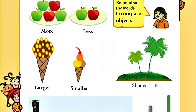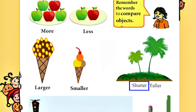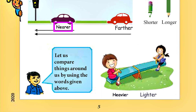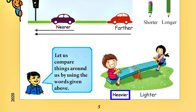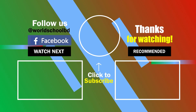Let's go over all the words we learned on this page one more time. More, Less. Larger, Smaller. Shorter, Taller. Nearer, Farther. Shorter, Longer. Heavier, Lighter. More, Less. Larger, Smaller.